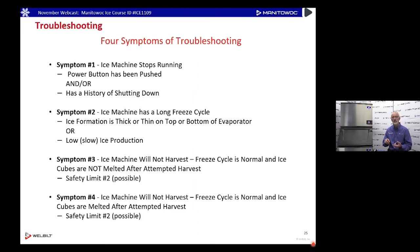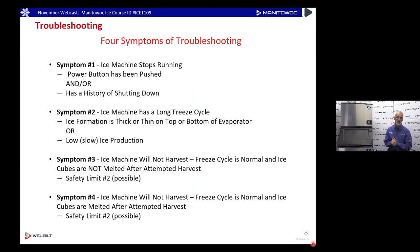Symptom number one: a situation where the machine stops running, won't run, or has a history of shutting down. For example, a customer says: 'I came in the other day, it was off, I had to turn it back on. I came in this morning again and had to turn it back on again — it keeps shutting itself off.' That would be symptom number one — a history of shutting down. Symptom number two: maybe the machine has a long freeze cycle, poor ice formation somewhere on the evaporator grid, or this could be a low or slow ice production call. For example: 'When I first got it, it kept up with me just fine, but now I'm starting to run out of ice — it just doesn't seem like it's doing as well as it did when I first got the machine.' That would be considered a low or slow ice production call.